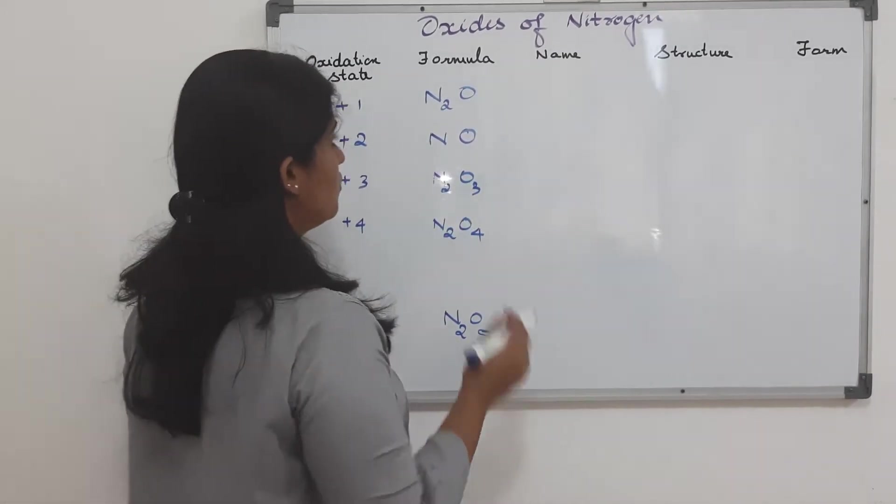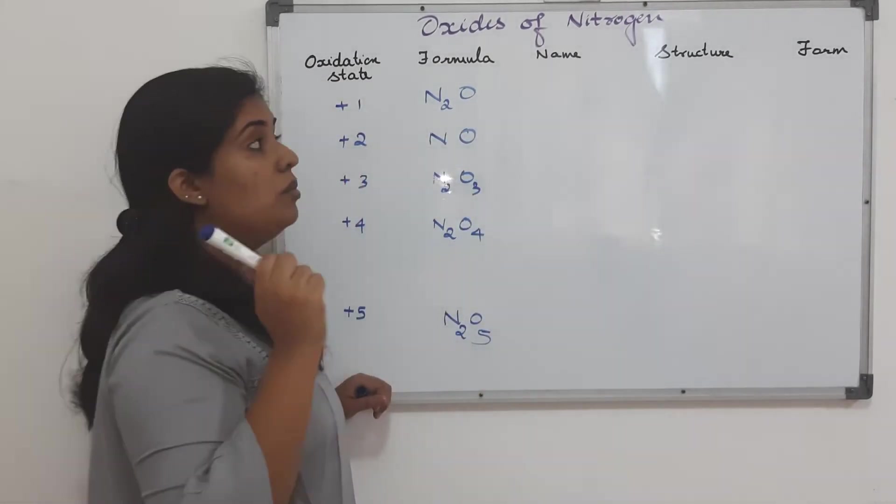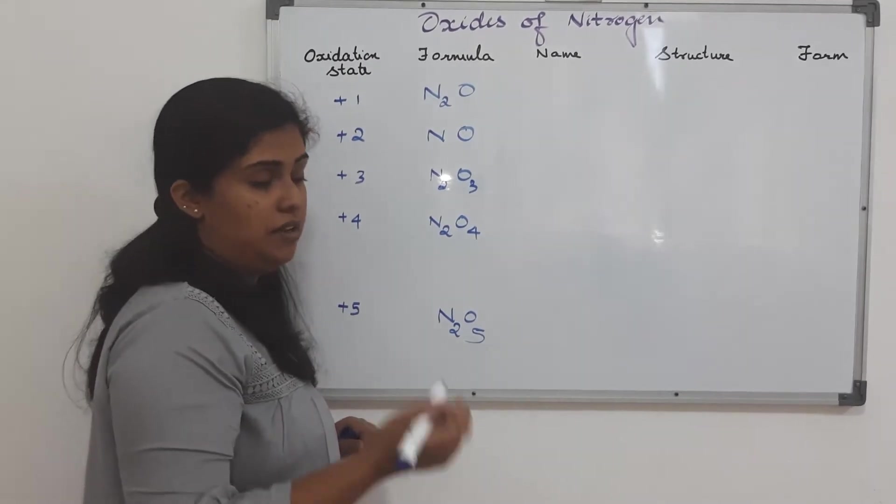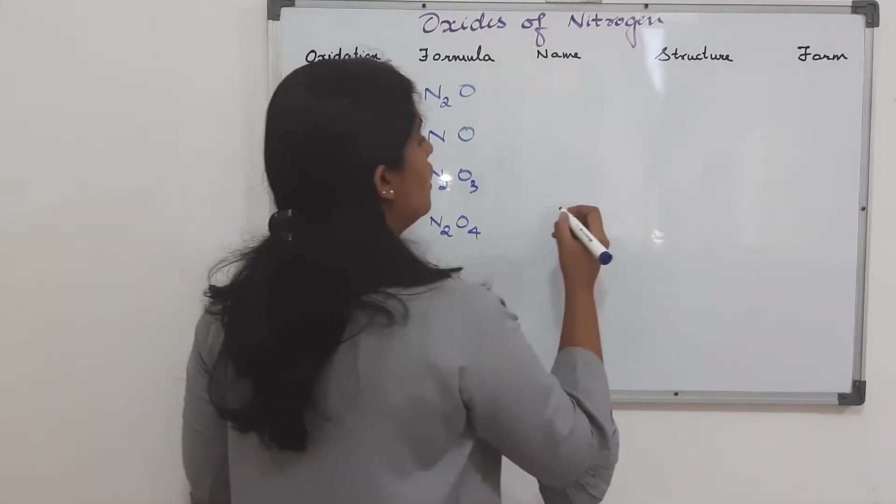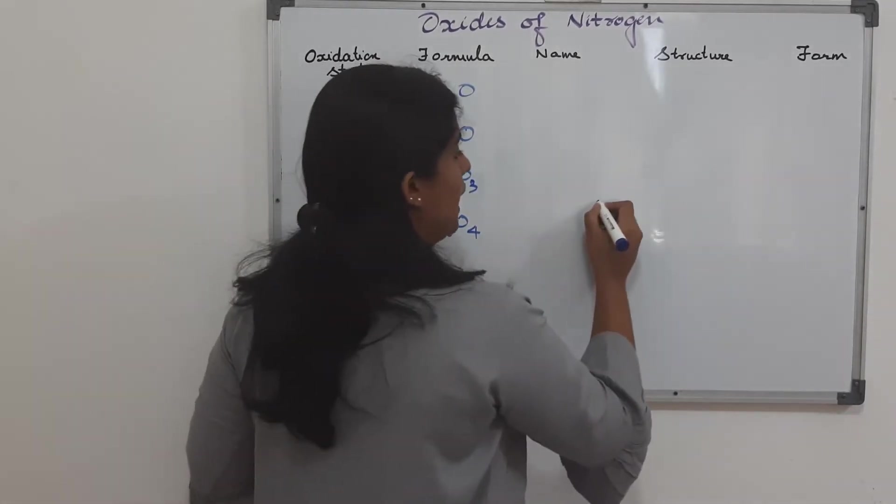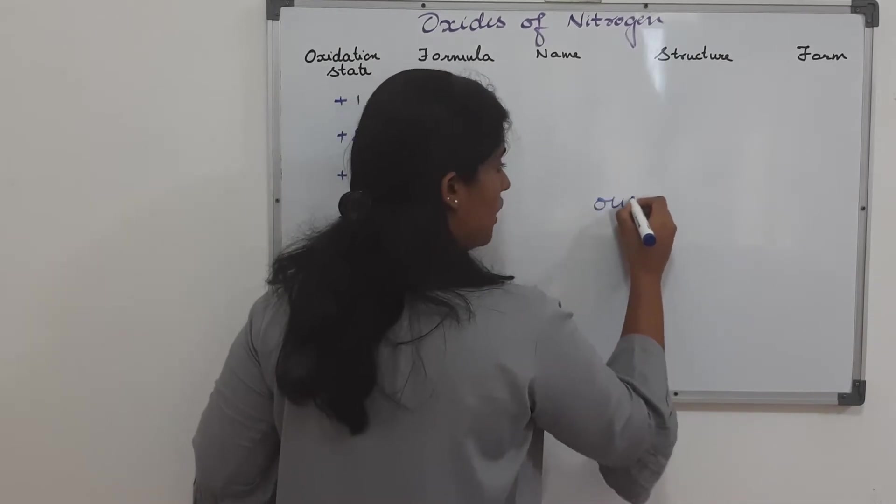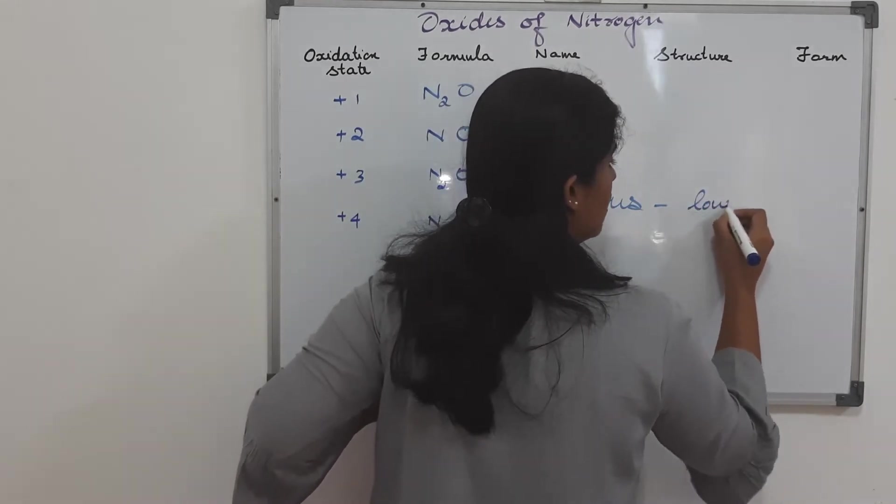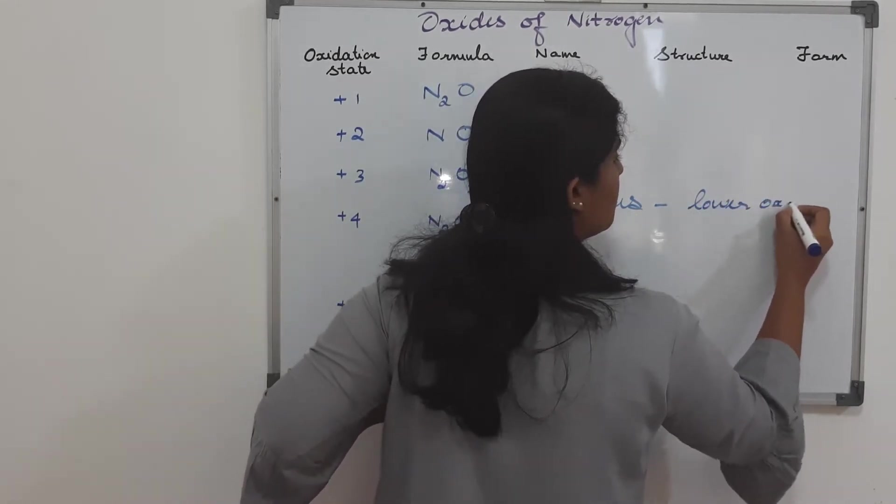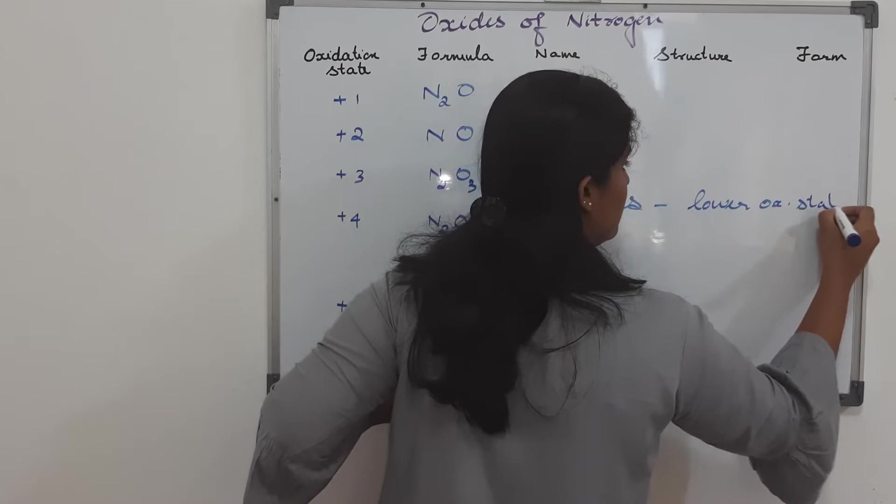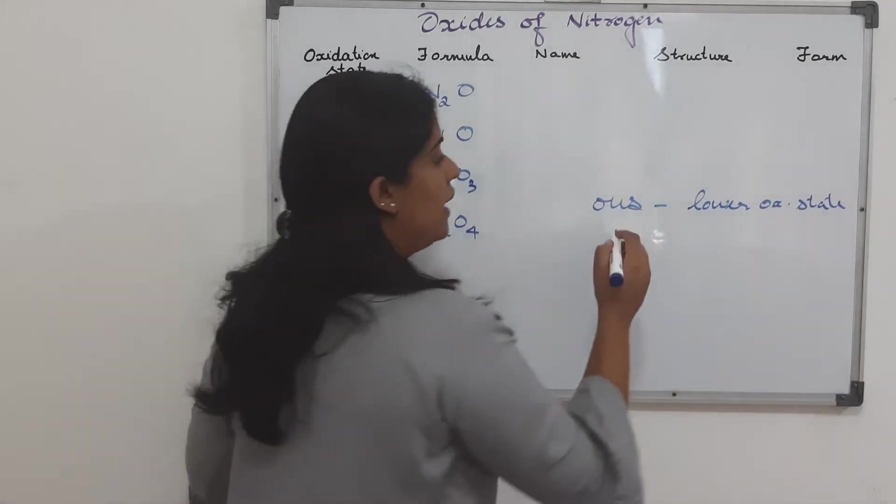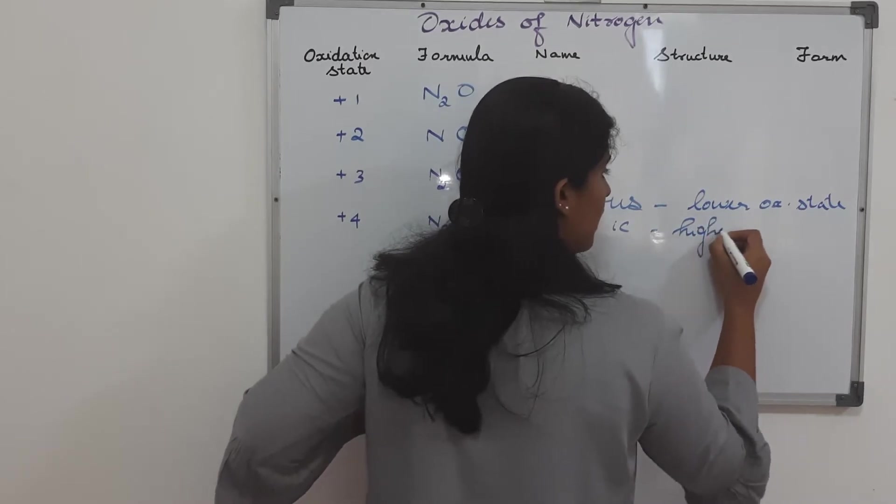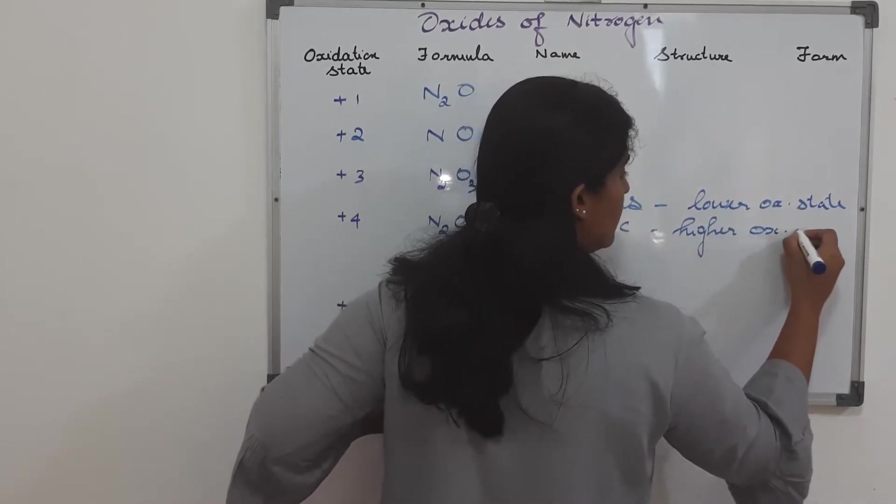Between these two, when you write a name, one rule to be remembered, not just for oxides of nitrogen, but for oxoacids of sulfur or phosphorus also. We can always say that something that ends the name, that ends with the word OUS, it corresponds to a lower oxidation state.